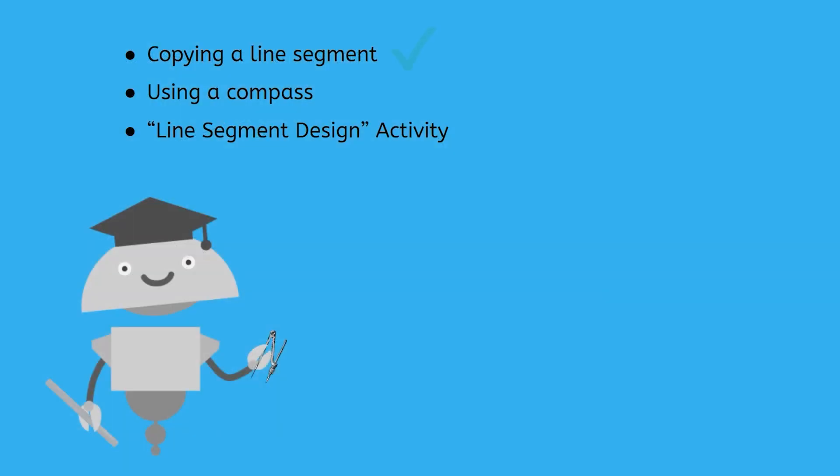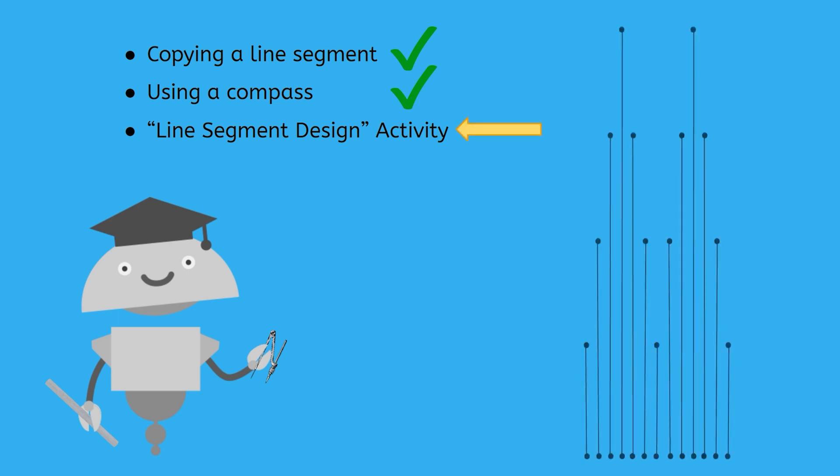Now you can copy line segments and you've gotten pretty good at using a compass. You'll need to be able to draw all sorts of things with your compass in this course so you get all the practice you can in now. This way you'll be super confident using your compass later. Your next step is to complete the line segment design activity. It's on the next page in your notes template. Have fun making your design and I'll see you next time.